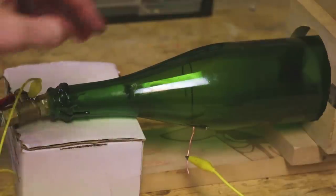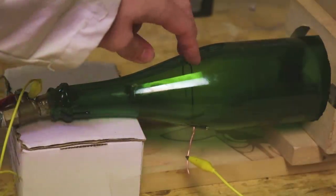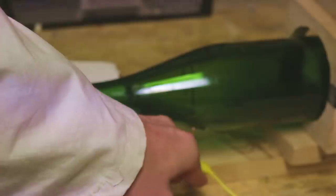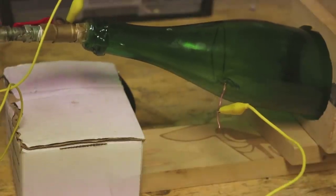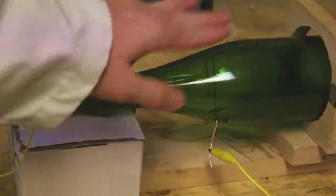On this end is going to be our cathode, so we're going to connect up the negative to this end, while on this end over here is going to be our anode, so where we connect up the high voltage positive. And of course this valve is just sealed off going over to the vacuum pump so that it can achieve the vacuum inside the chamber.